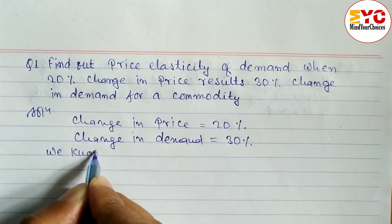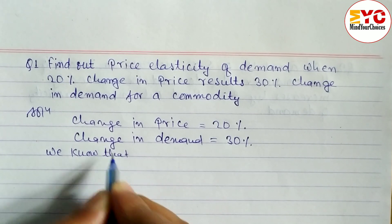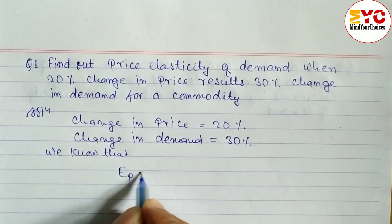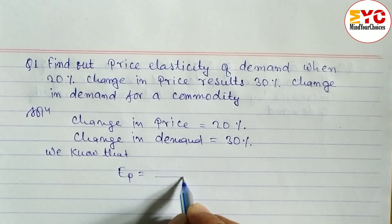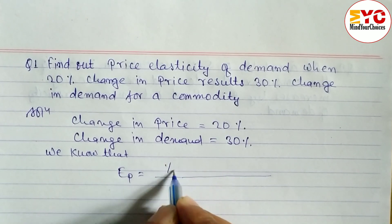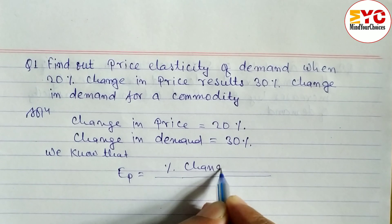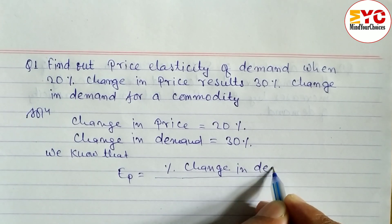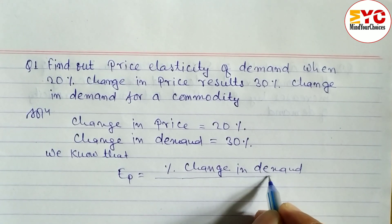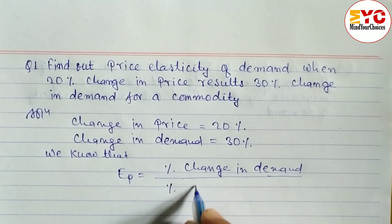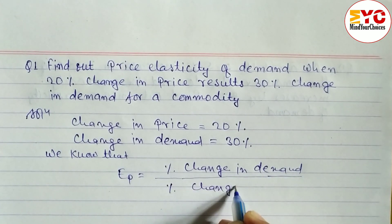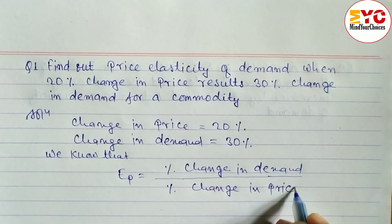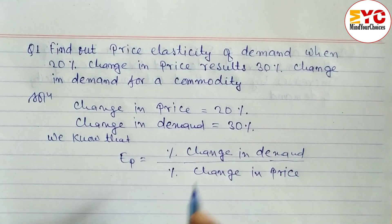We know that the formula of price elasticity of demand is: EP (price elasticity of demand) is equal to percent change in demand divided by percent change in price.